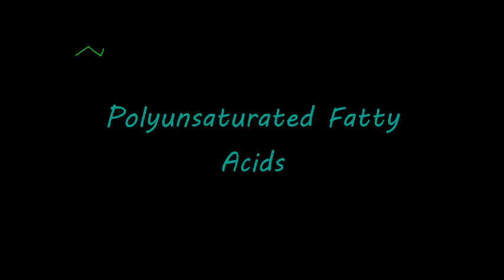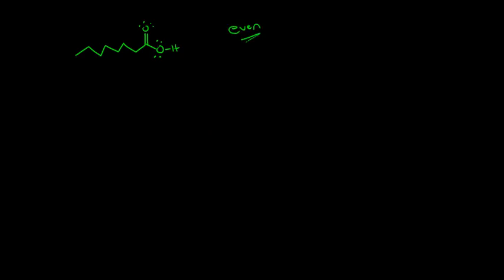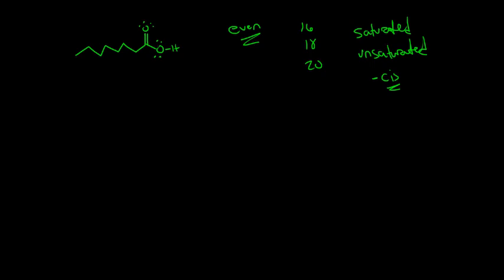In the previous video, we learned that fatty acids are long chains of carbon with a carboxylic acid functional group on one end. We learned that these are typically even-numbered carbon chains, and really common chain lengths in biological systems are 16, 18, and 20 carbons long. We talked about how fatty acids can come as saturated, which means there are no double bonds, or unsaturated, which contain at least one double bond. And in biological systems, these double bonds are almost always in the cis conformation.